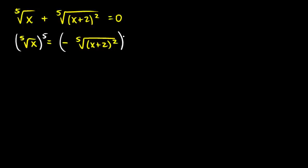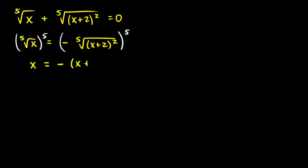I'll raise both sides to a power of 5. The power of 5 gets rid of the fifth root, so on the left we just have x. On the right, we have a negative number raised to an odd power, so that gives a negative answer. The fifth root and the power of 5 undo each other, so we end up with negative x plus 2 squared.